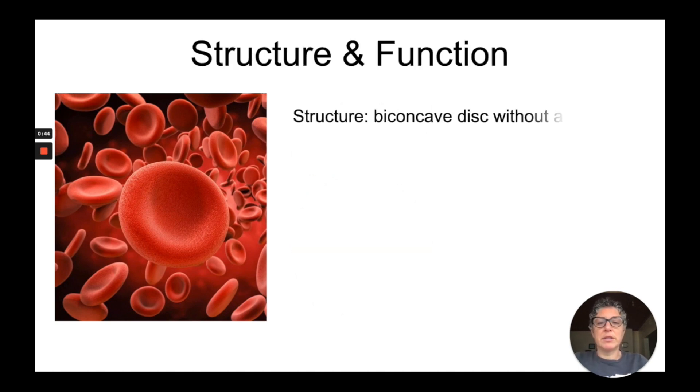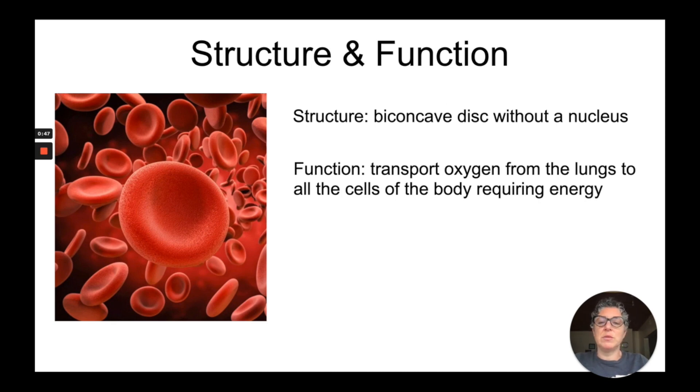So let's look at the structure and function. The structure of a red blood cell is what we call a biconcave disc. So the disc is the round shape. Biconcave refers to the fact that it is indented on both sides, inwards, and also a mature red blood cell does not have a nucleus.